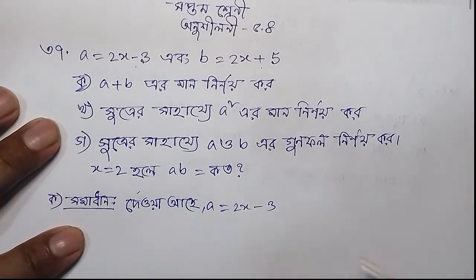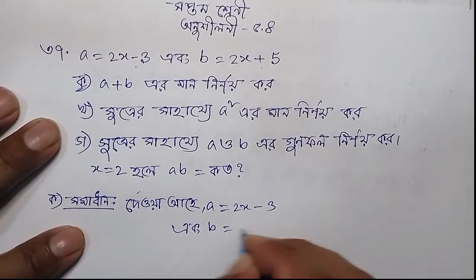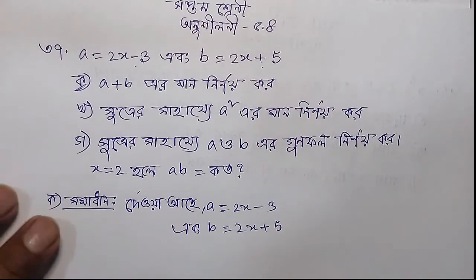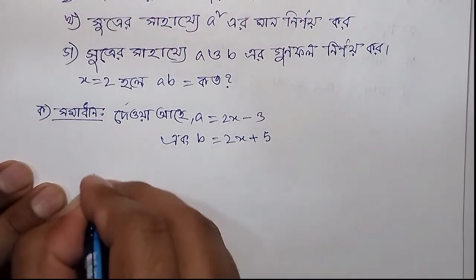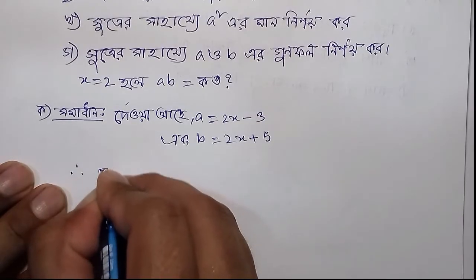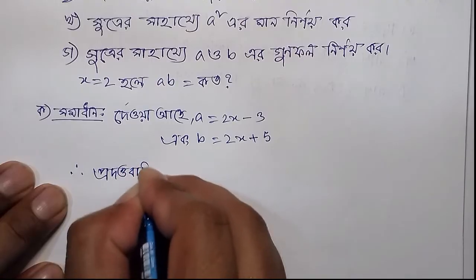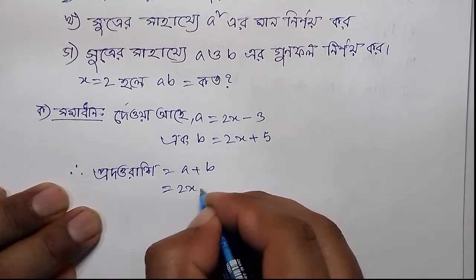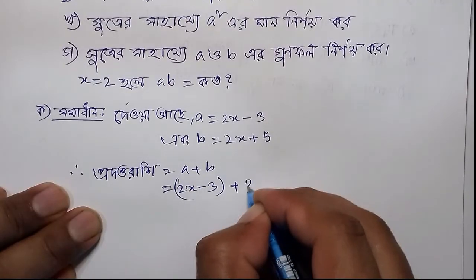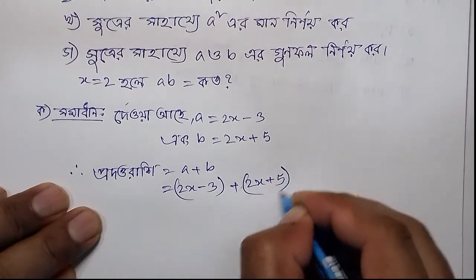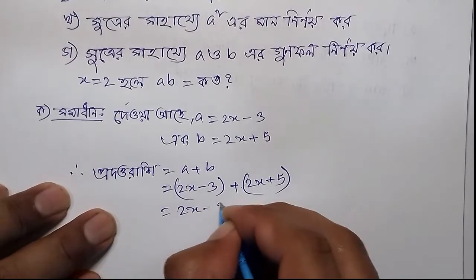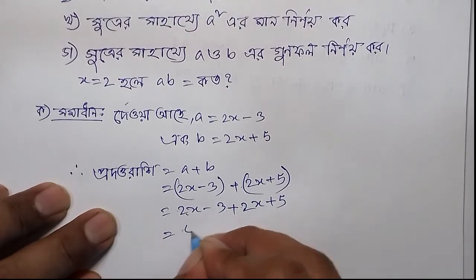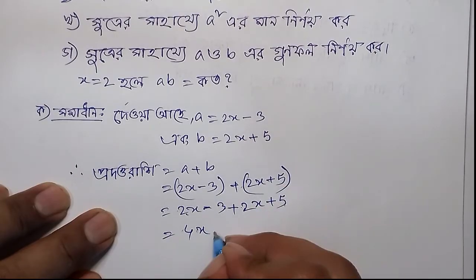a is equal to 2x minus 3 and b is equal to 2x plus 5. So a plus b is equal to: (2x minus 3) plus (2x plus 5), which gives us 4x minus 3 plus 5, which equals 4x plus 2.